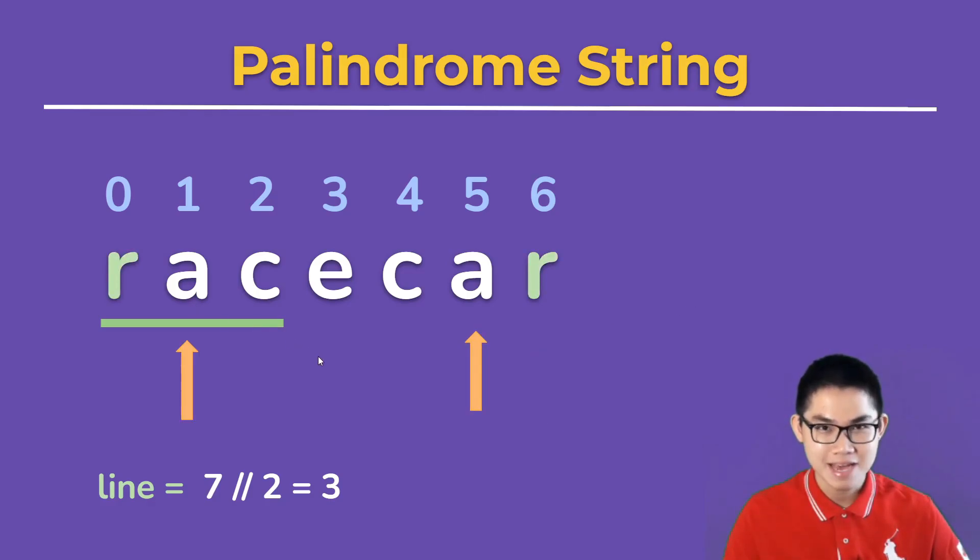The next one, A and A. Yep, they're the same. How about C? Yes, they're the same. So once this arrow is at the end of this line, you know that this string is a palindrome.